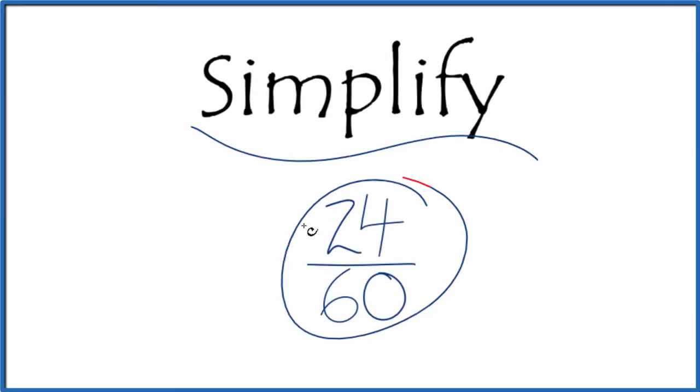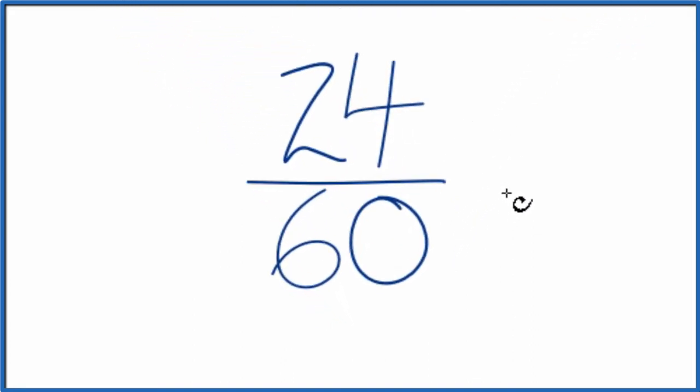Let's simplify the fraction 24/60 and we'll show you two ways to do that. So what we're trying to do, we're trying to find another fraction that's equivalent, has the same value as 24 over 60, just that we've simplified it down to its lowest form.